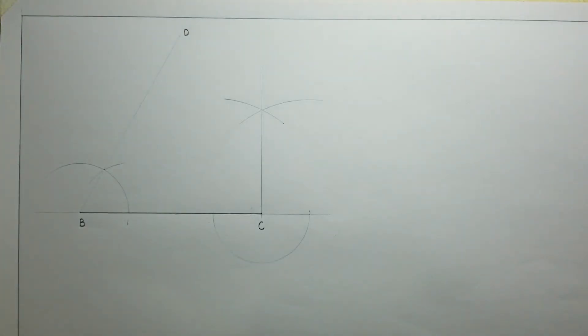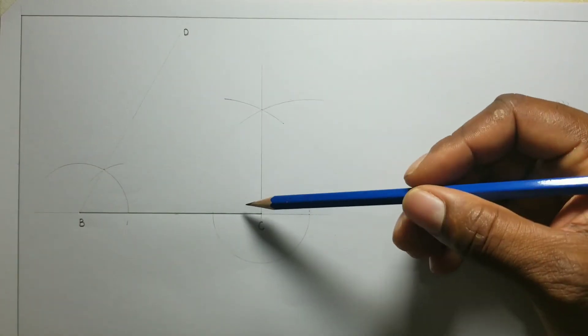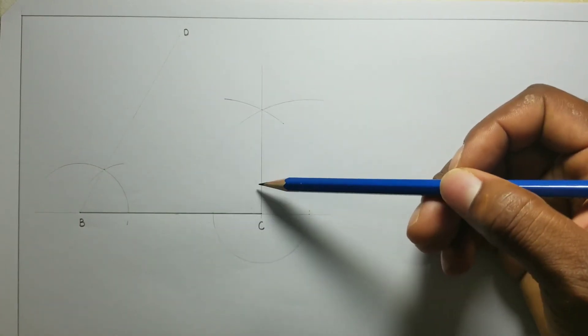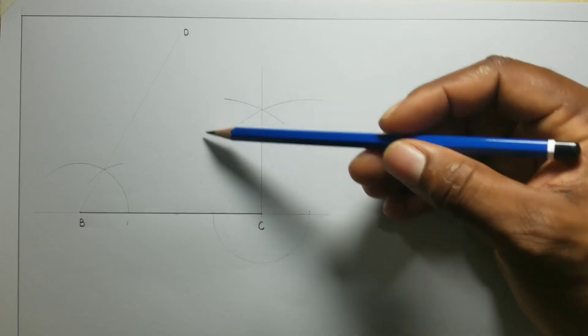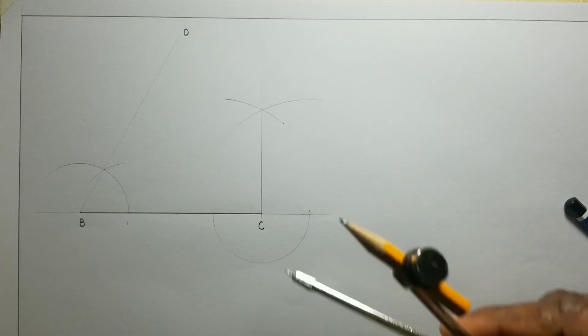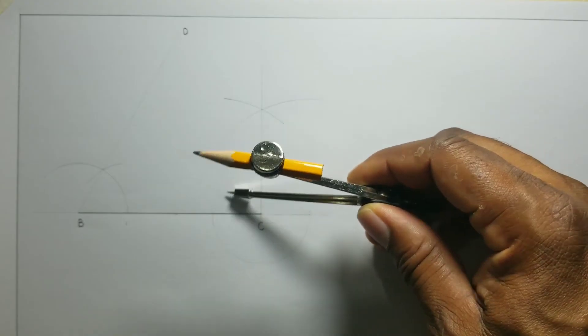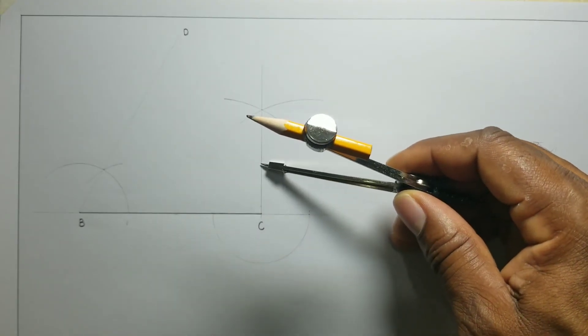Now that I have my 90 degree angle, I will now need to bisect this angle to get my 45 degrees. So I will open my compass, put my compass at C and scribe an arc to touch the two lines of the angle I need to bisect.